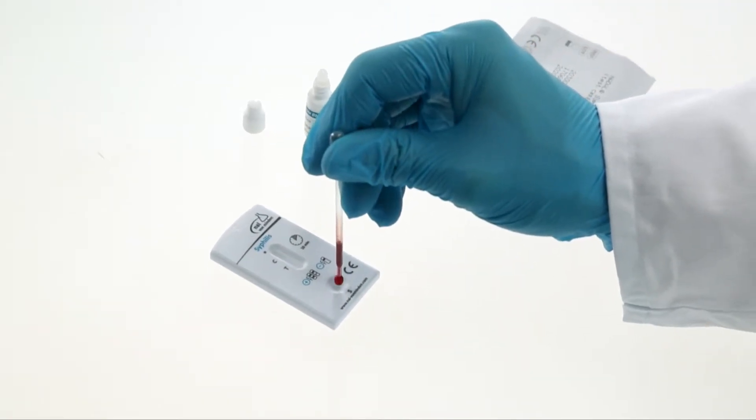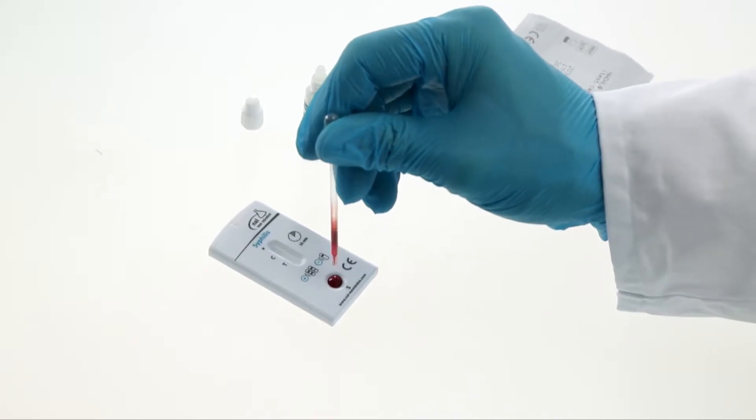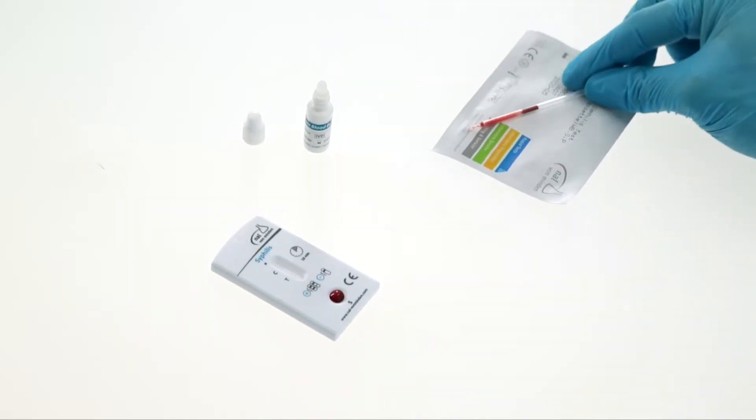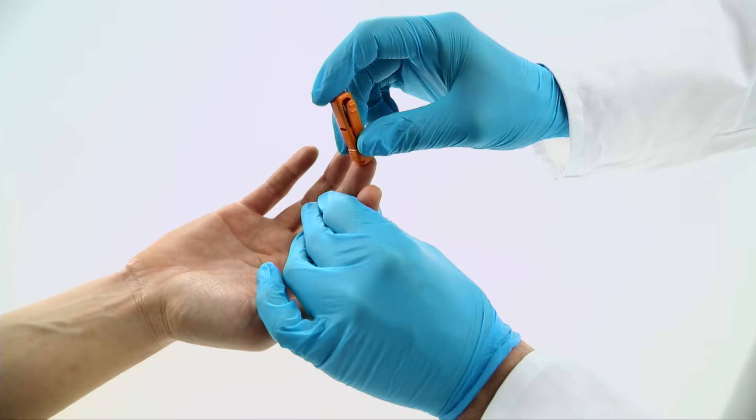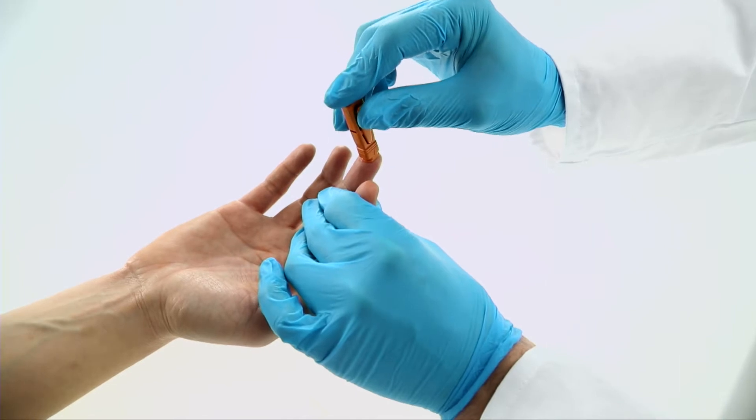Holding the pipette provided vertically, dispense two drops of whole blood sample to the sample well of the test cassette, then add one drop of buffer. You may also use blood obtained by finger stick.